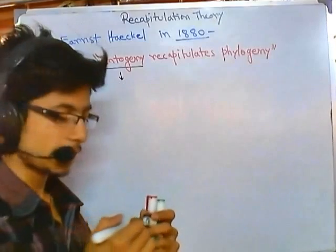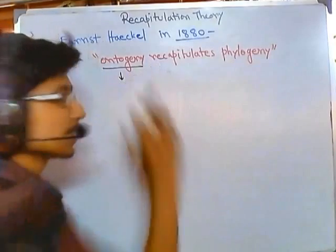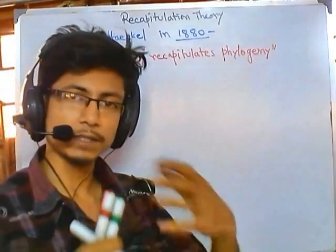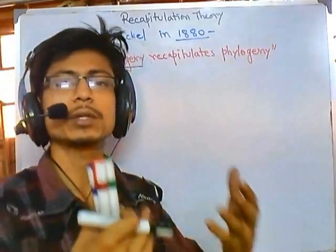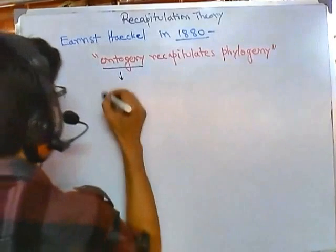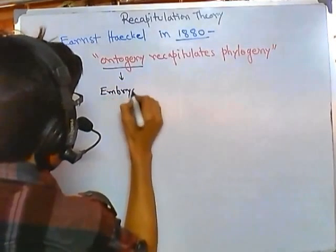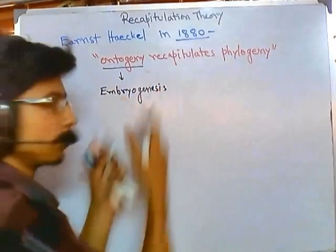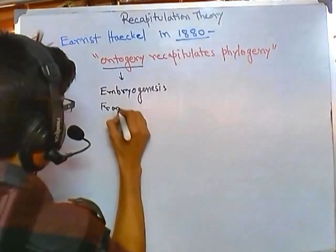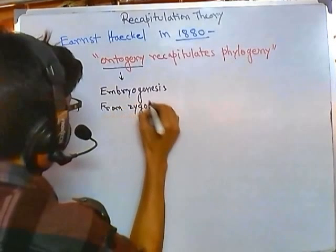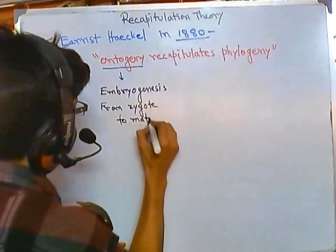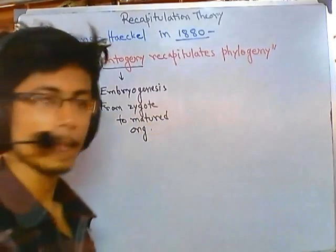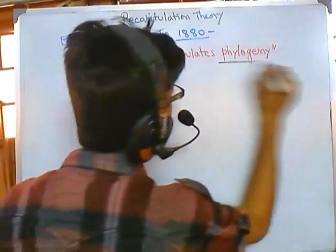Ontogeny means the development of an embryo — it deals with how an egg is fertilized and, after fertilization, develops into a matured embryo. It is simply embryogenesis, the step-by-step process from zygote to a matured organism or individual.